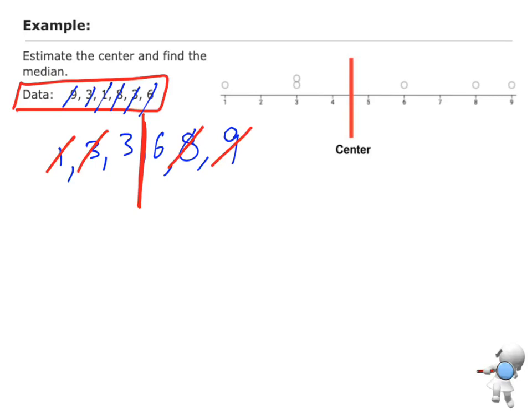How do I find halfway between? I'm going to take those two numbers, add them together, and divide by 2. So that's going to give me 9 divided by 2, which is 4.5. So for this data set, my median is 4.5.